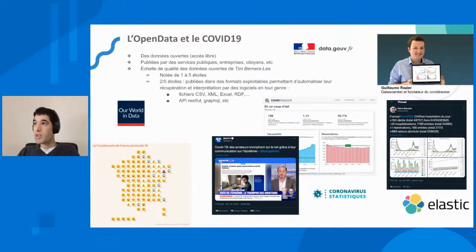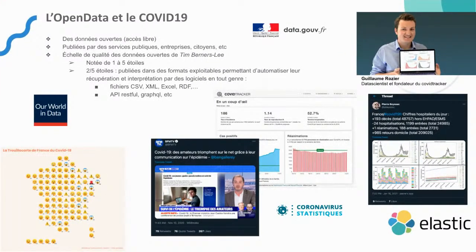L'Open Data, ce sont des données disponibles en accès libre, publiées par des services publics, des collectifs, des entreprises. Il y a une échelle de qualité établie pour noter la qualité de l'Open Data. Ce qui nous intéresse, c'est à partir de la note 2 sur 5, c'est-à-dire les données dans des formats compréhensibles par des processus automatisés : CSV, XML, Excel, RDF, JSON, YAML. Sur tout ce qui est COVID, la plupart du temps c'est du CSV.